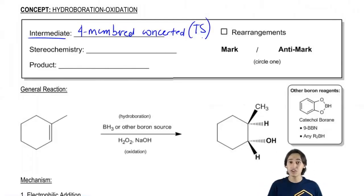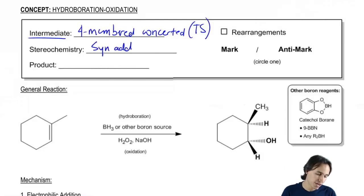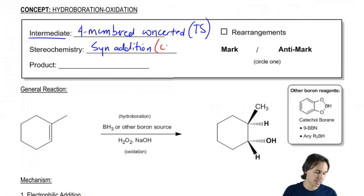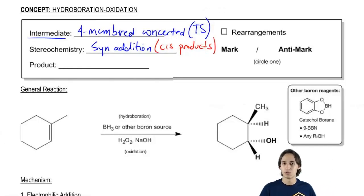Now the stereochemistry for this is going to be very unique. It's actually going to be syn addition. Now remember that I told you guys for oxymercuration that anti-addition meant that you get trans products. Well, it's the same kind of thing for syn addition. All syn addition means is that you're going to get cis products. And once I show you the mechanism, that will make more sense.